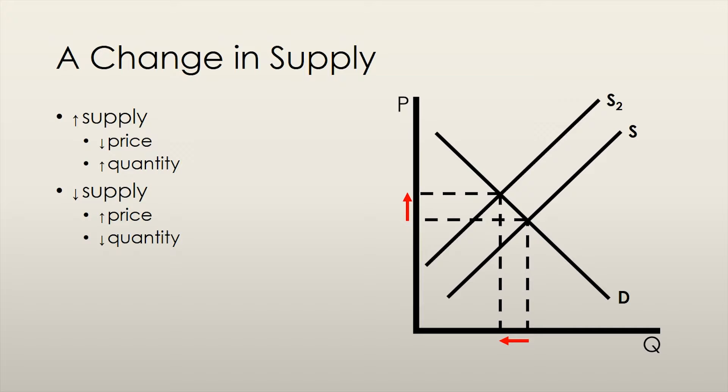A decrease in supply has the exact opposite effects of an increase in supply. The equilibrium price increases and the equilibrium quantity decreases.